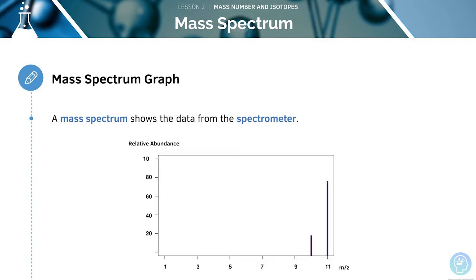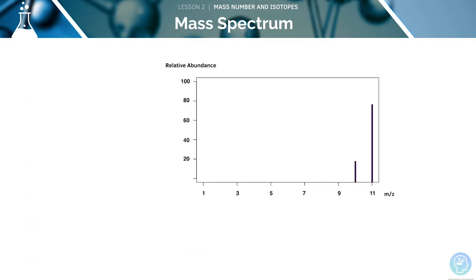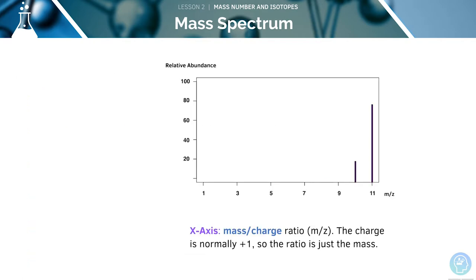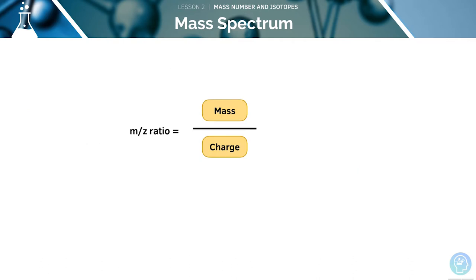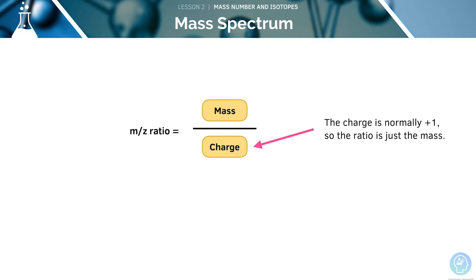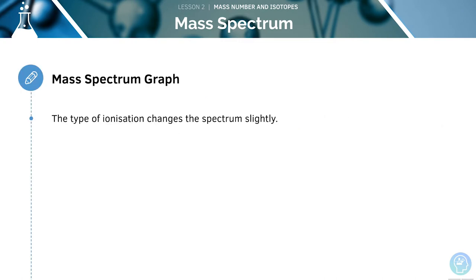The mass spectrum is a graph showing the data obtained from a spectrometer. The x-axis shows the mass-to-charge ratio — since the charge is normally plus one, the ratio is simply the mass. The y-axis shows the relative abundance of ions given as a percentage. Sometimes the mass-to-charge ratio is expressed as m/z.